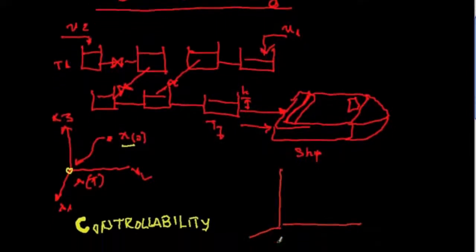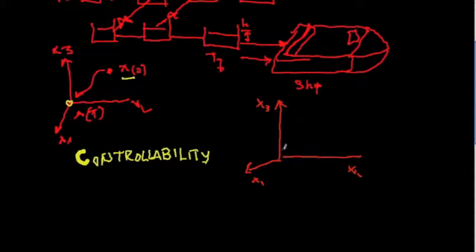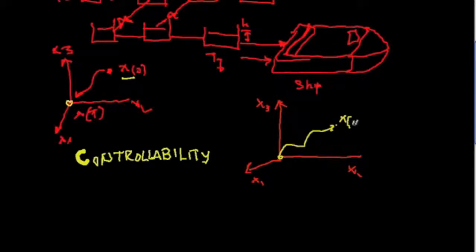Complementary to this notion is the notion of reachability, which is defined in a slightly different manner. Looking again at the state space picture with x1, x2, x3, reachability is the ability to evolve the system from the initial state at the origin to some desired state x(t) in finite time.